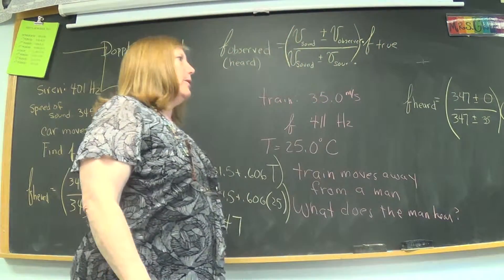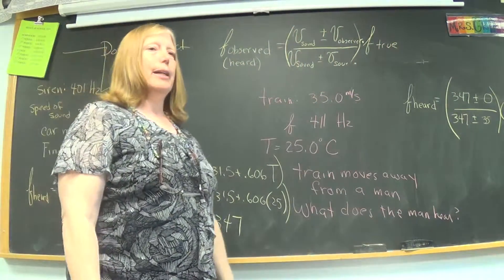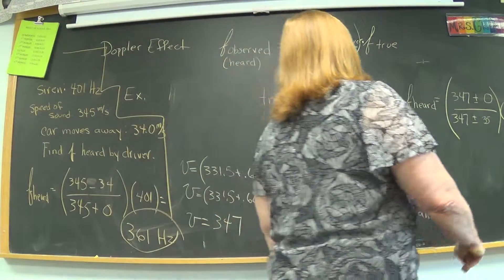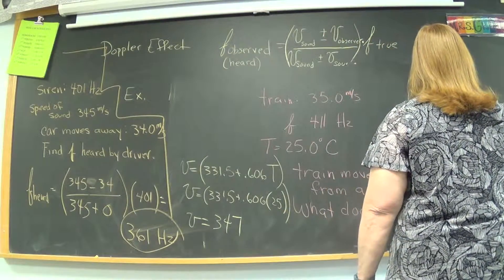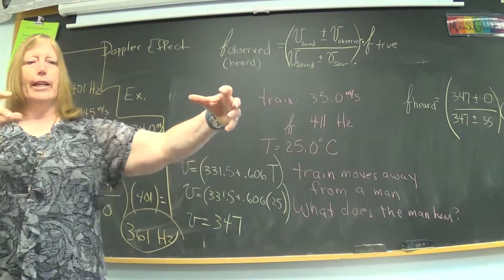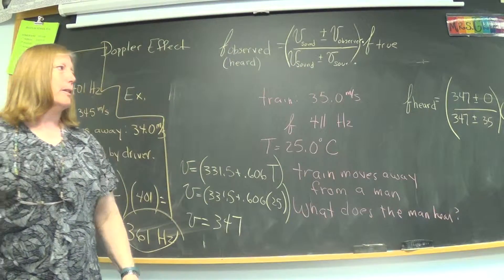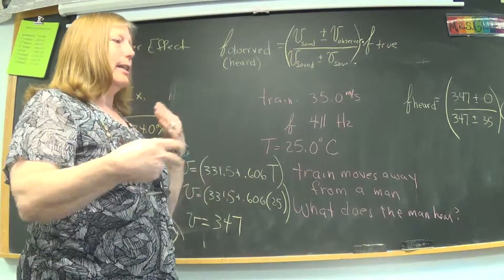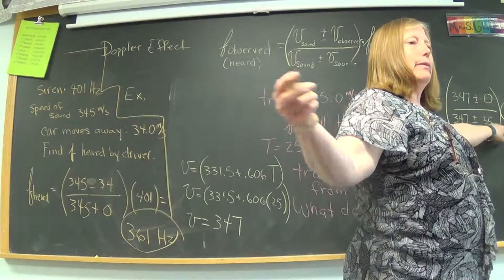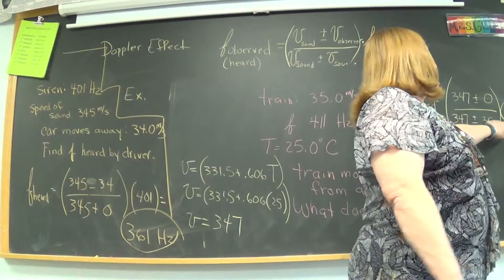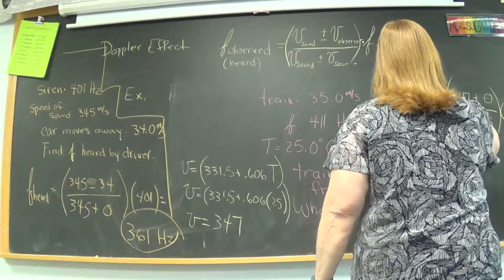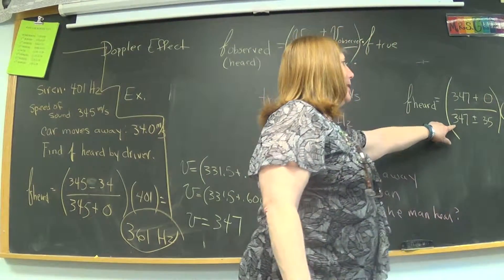All right, I've done everything for you except decide whether it's plus or minus. So, if you're having trouble with that, you can listen. If you're not, don't listen. So, because the train's moving away, the rings of sound are getting further apart. We're expecting the frequency to hit us at longer and longer intervals. So, we're expecting the sound to go down. So, we're expecting this to be less than 411. So, we can't mess with this because it's zero, but we can mess with this.